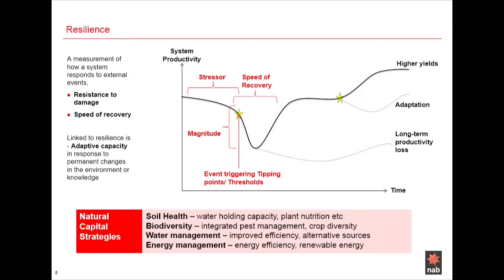One of the most important concepts in the link between natural capital and farm performance is resilience — essentially the ability to bounce back after a system shock. The speed of recovery and how far down you dip are both important. For farmers, this means more consistent returns across good years and bad. This consistency is critical to plan, manage, and invest in one's business over time, and enables the building of long-term trusting relationships and loyalty with supply chain partners.